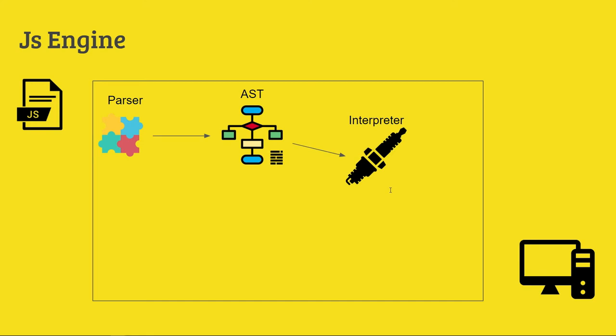The AST is passed down to the interpreter. The interpreter works on the JavaScript code — the abstract syntax tree is created — and 0s and 1s are converted. It is converted to machine code.